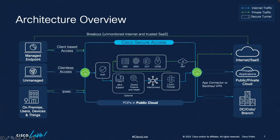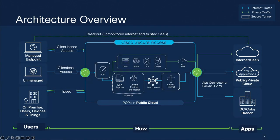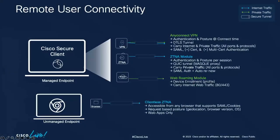The architectural overview shows users on the left and their target applications on the right. In the middle is the Secure Access cloud security infrastructure — DNS, Secure Web Gateway, DLP, CASB, Firewall — all delivered as a cloud service. The platform also provides options for onboarding both users and applications to the service.